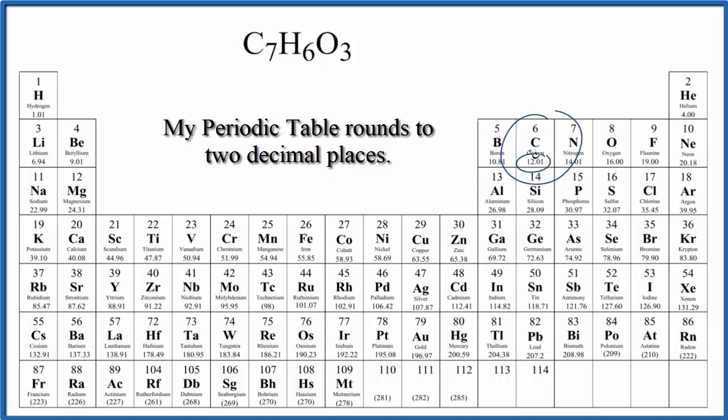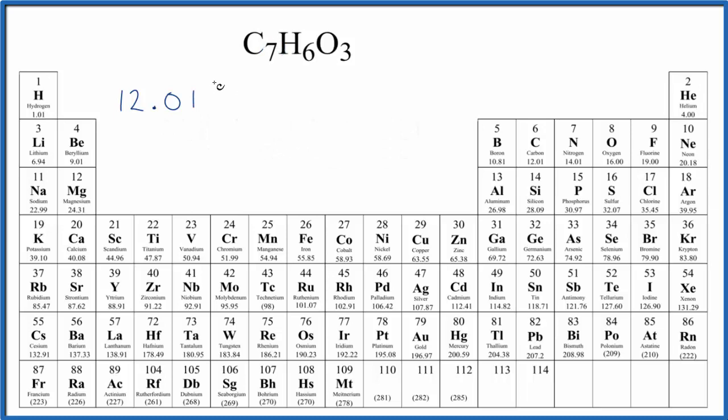So carbon right here, 12.01 grams per mole. Now we'll use seven carbon atoms. For hydrogen we have 1.01 grams per mole and we have six hydrogen atoms plus oxygen 16.00 grams per mole and we have three of those.